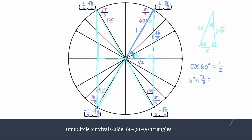The sine of pi over three — the same as 60 degrees — is opposite over hypotenuse: root three over two over one, so the y-coordinate is the sine. For the tangent of 60 degrees, tangent is opposite over adjacent: root three over two divided by one half. Multiplying by the reciprocal gives root three over two times two over one, so the tangent of 60 degrees is the square root of three.